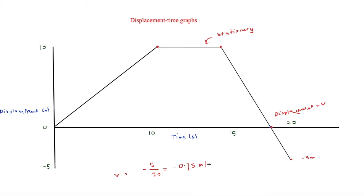So the average velocity is minus 0.25 metres per second. The gradient of a displacement-time graph is the velocity. A steeper gradient means a higher velocity — for example, this section here is steeper, which means it's going back quicker, while this other section is less steep.